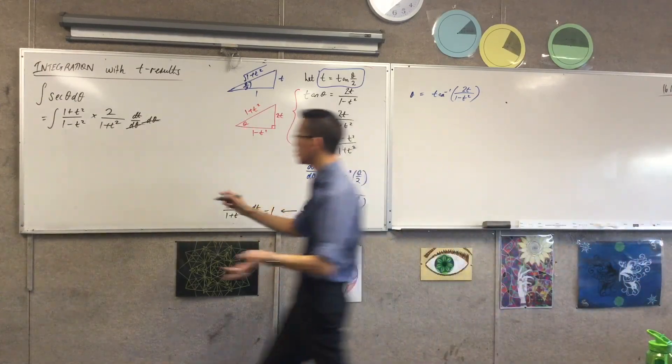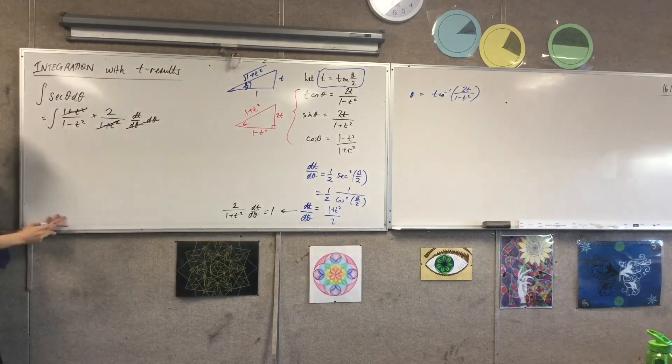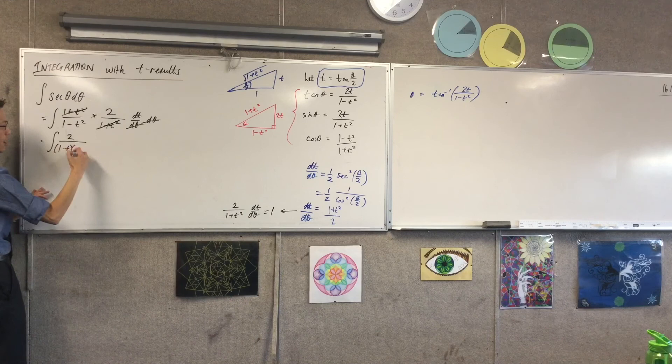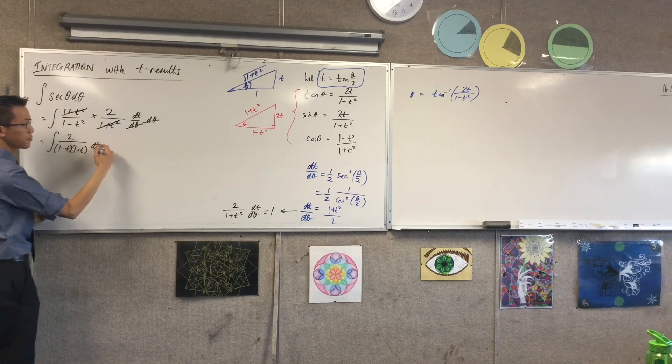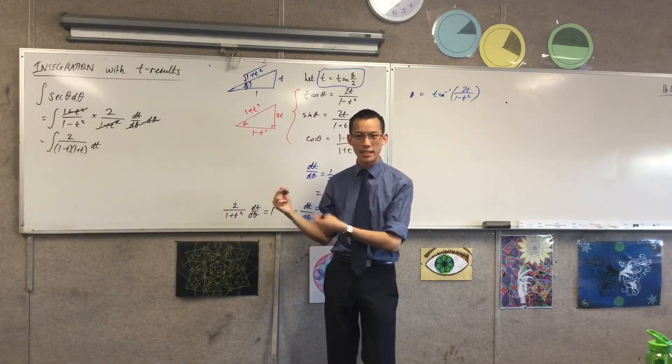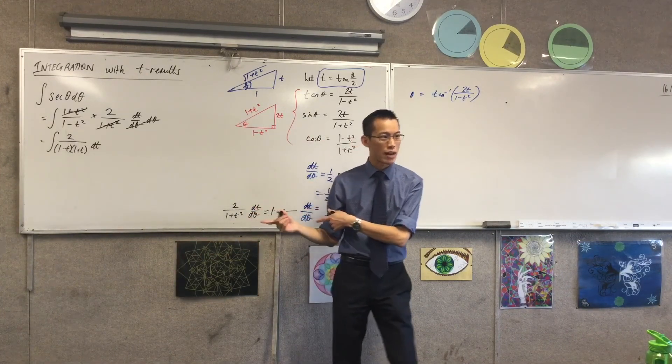So you can see here, these guys are going to go, which leaves you with 2 on, I'm going to factorize it. Why am I going to factorize? Because partial. Because I'm going to use partial fractions here. Now we actually did this same set of partial fractions before, do you recall?